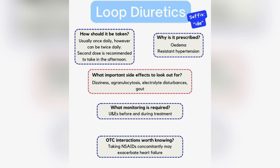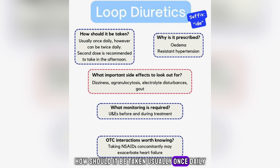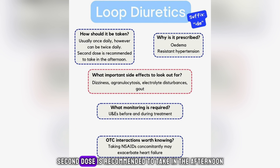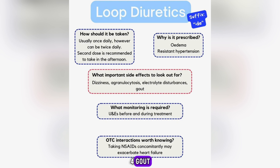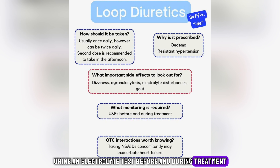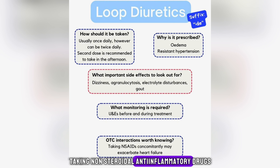Treatment therapy of loop diuretics. These medications contain 'ide' at the end of their generic names. Why is it prescribed? 1. Oedema. 2. Resistant hypertension. How should it be taken? Usually once daily, however can be twice daily; the second dose is recommended to be taken in the afternoon. What important side effects to look out for? 1. Dizziness. 2. Agranulocytosis. 3. Electrolyte disturbances. 4. Gout. What monitoring is required? Urine and electrolyte test before and during treatment. Interactions: taking non-steroidal anti-inflammatory drugs concomitantly may exacerbate heart failure.